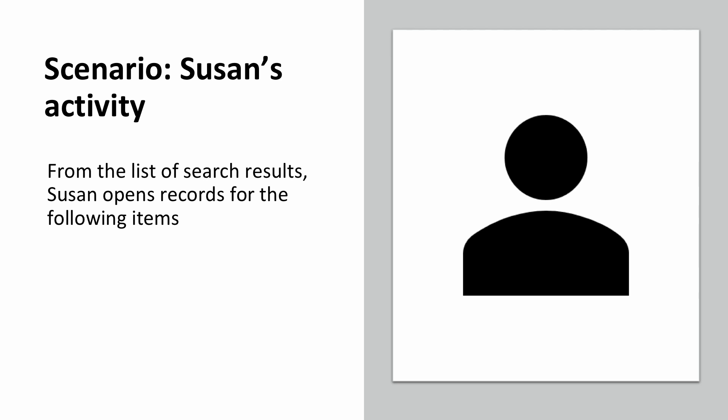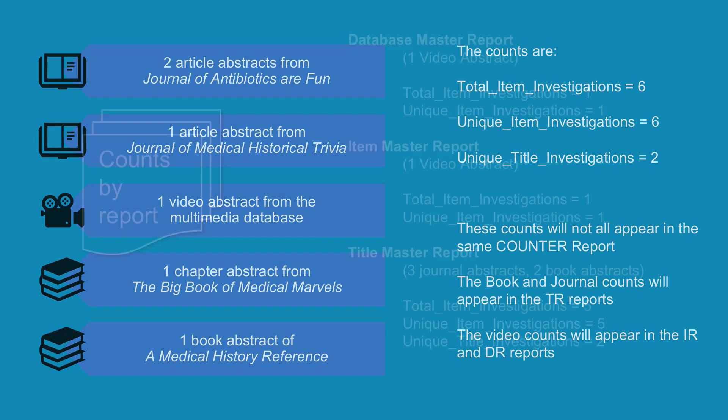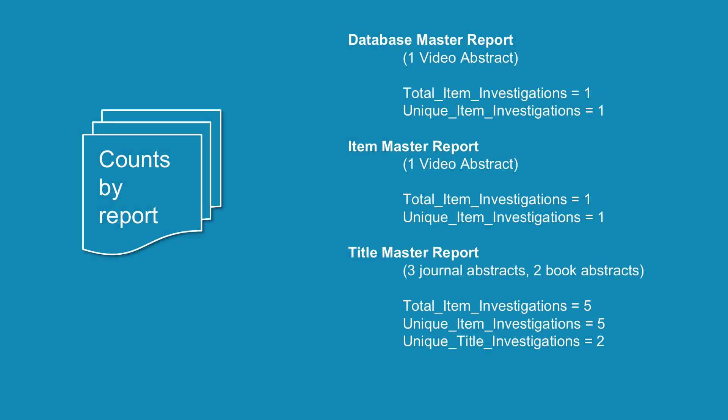From the list of search results, Susan opens records for the following items: two article abstracts from Journal of Antibiotics, one article abstract from Journal of Medical Historical Trivia, one video from the multimedia database, one chapter abstract from the Big Book of Medical Marvels, and one book abstract from a Medical History Reference. The counts for Susan's activity are 6 total item investigations, 6 unique item investigations, 5 unique title investigations, and 2 no license.